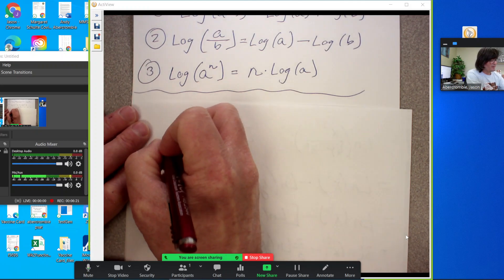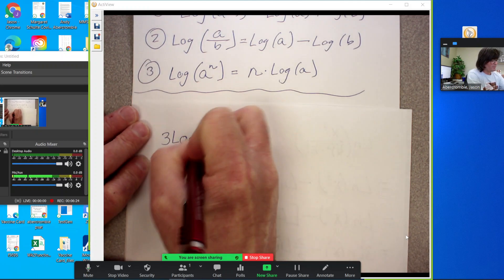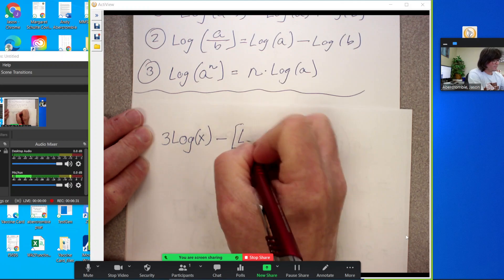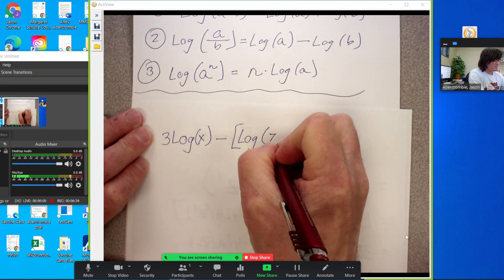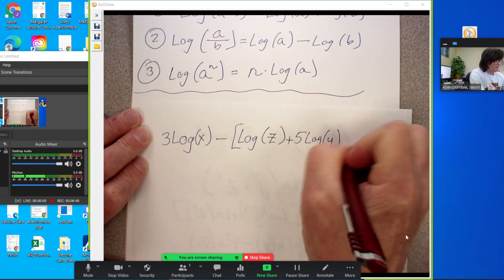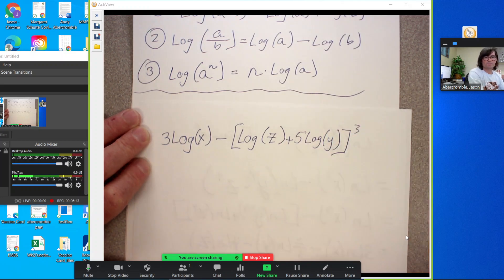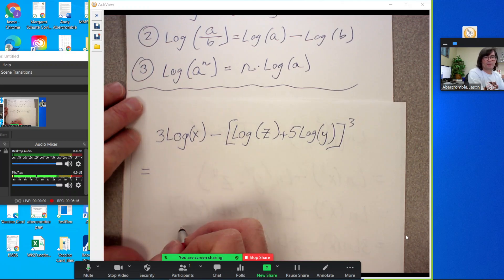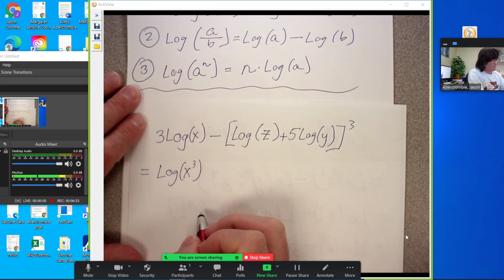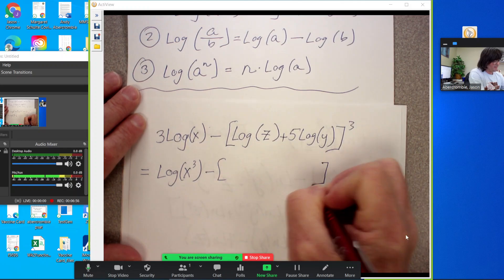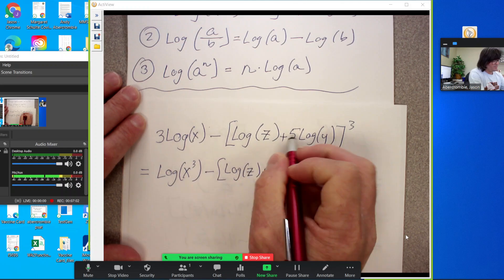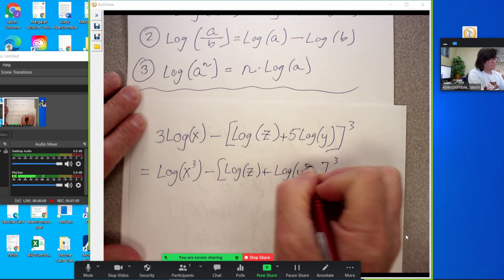Say I have three log of x minus, we'll have a big bracket, log of z plus five log of y. And we'll just do this whole thing cubed. So I want to smash all that into a single term. First thing is I'm going to bring this three up, make this log of x cubed. We'll leave the brackets alone on the outside, but inside we'll make this log of z plus bring that five up. So it's going to be a log of y to the fifth, just like that.